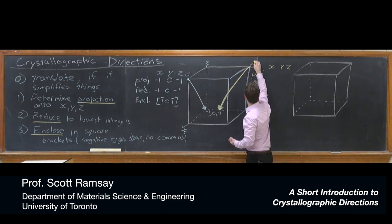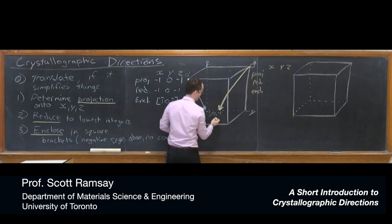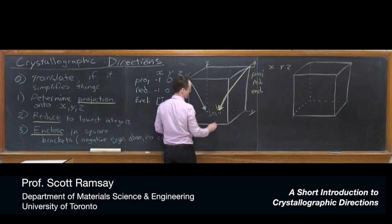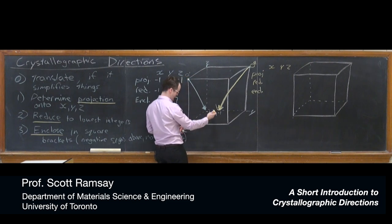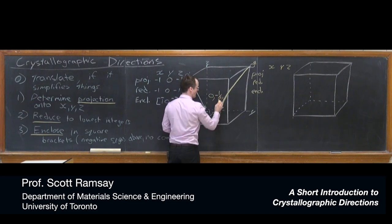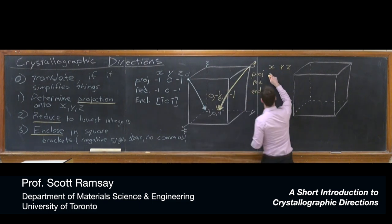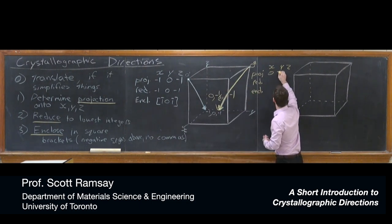With this case here, we could start with defining a new origin over here, O double prime. So if that's the origin, the point coordinates of the head of the vector here are going to be 0 in the x, negative 1 half in the y, and negative 1 in the z. That's as well what the projection is. The projection onto the x-axis is 0, onto the y is negative 1 half, and onto the z is negative 1.